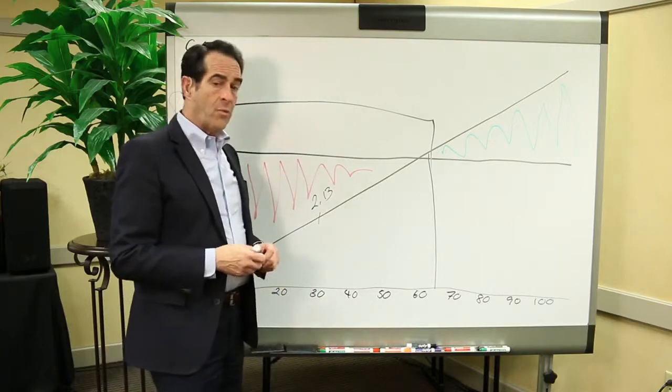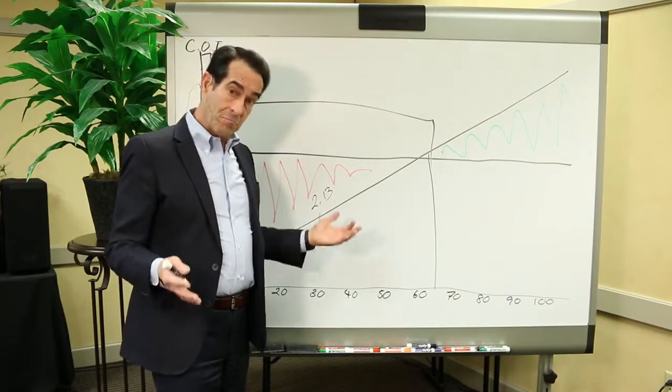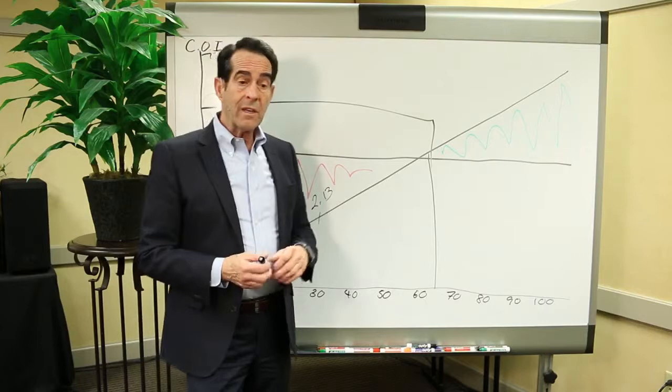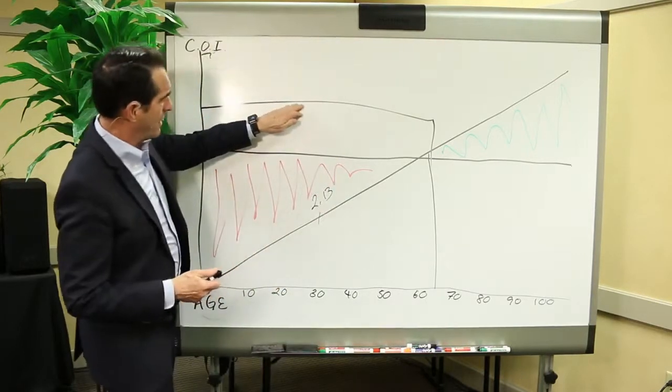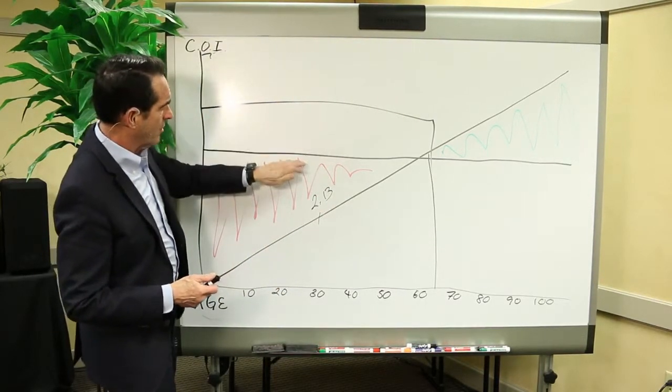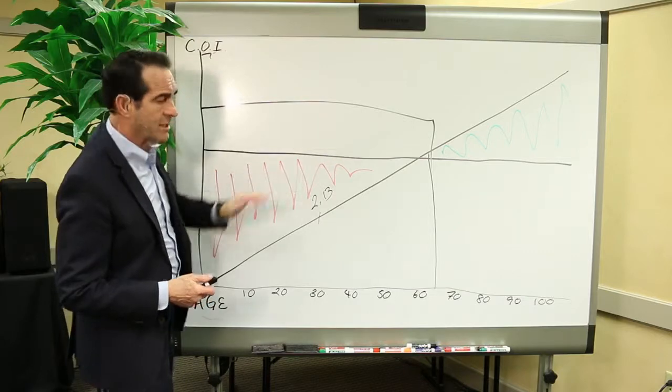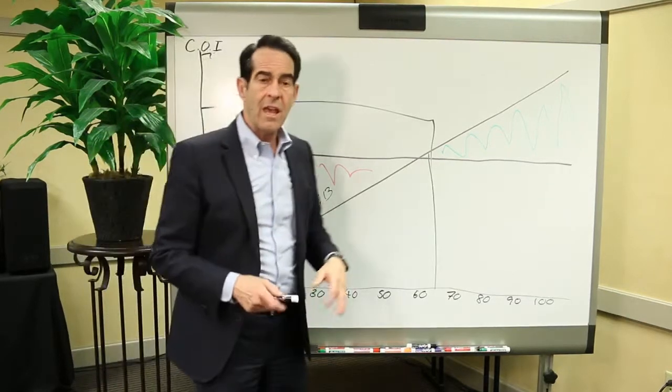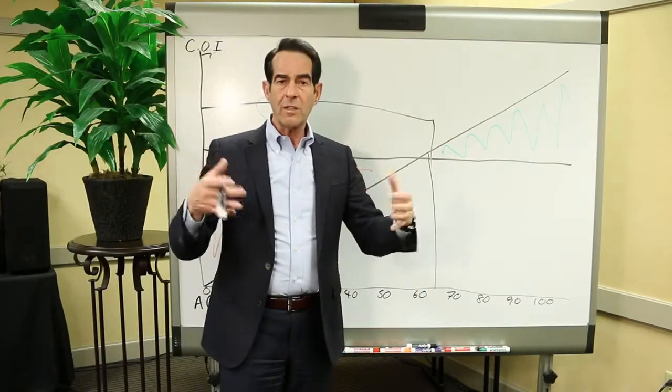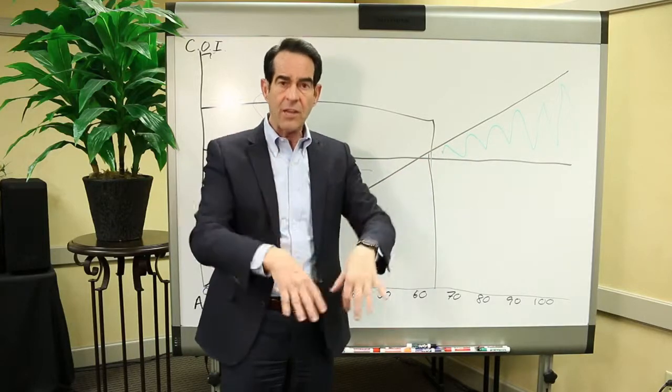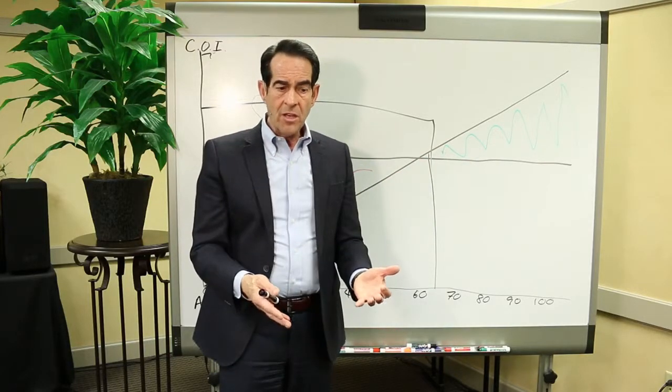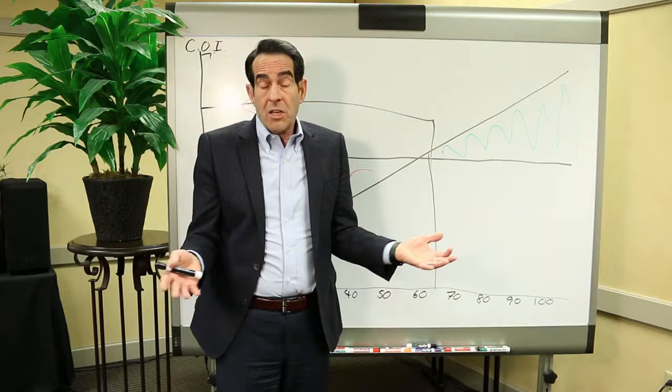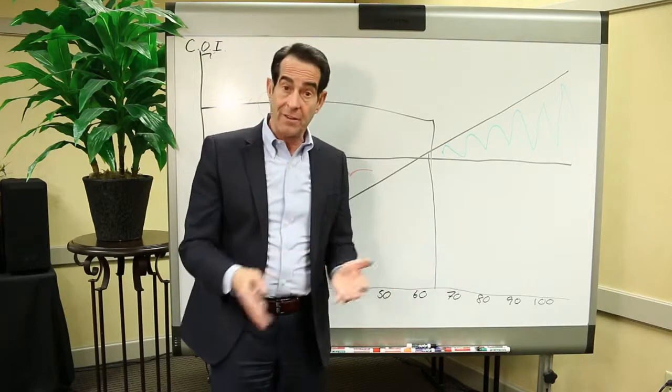And so if you wanted to just have death benefit, you could probably get away with paying a little bit less into a universal life policy because you were earning higher rates of return on the cash value in the insurance policy. So that was a cheaper way to buy death benefit.